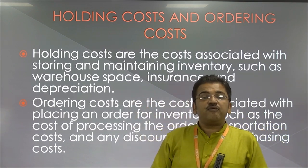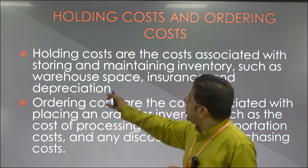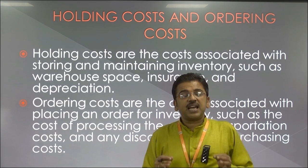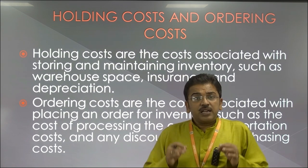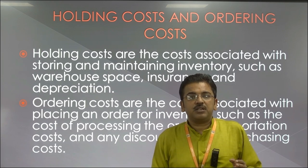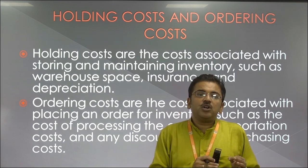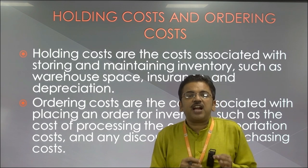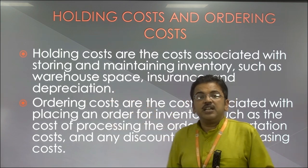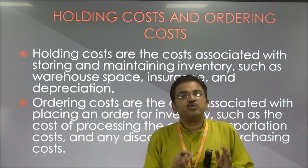Whenever we buy a product, whether it is raw material for any company, there is a depreciation which always goes on. The production manager must take into consideration that the product he is going to buy should have a minimum depreciation cost. For example, if he wants to use a product in June, he should have that product in May, so that it reduces warehousing cost, insurance cost, and depreciation.